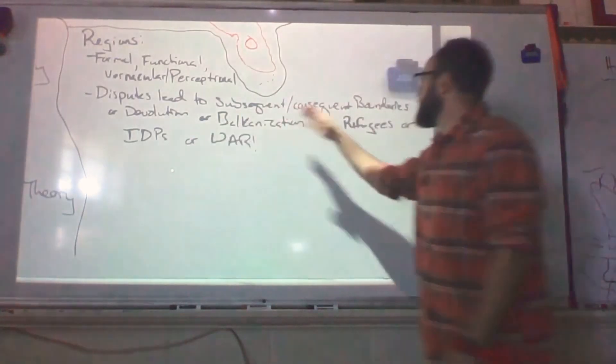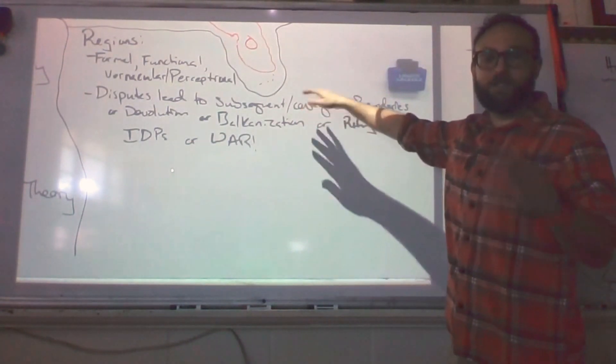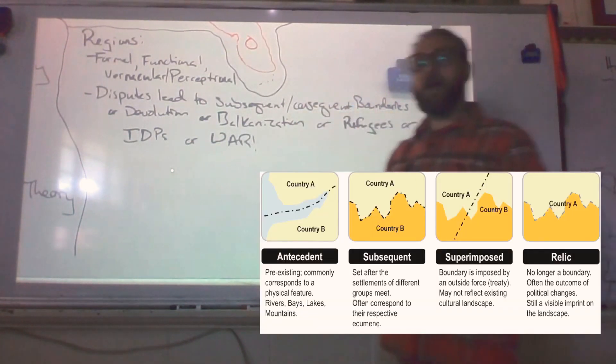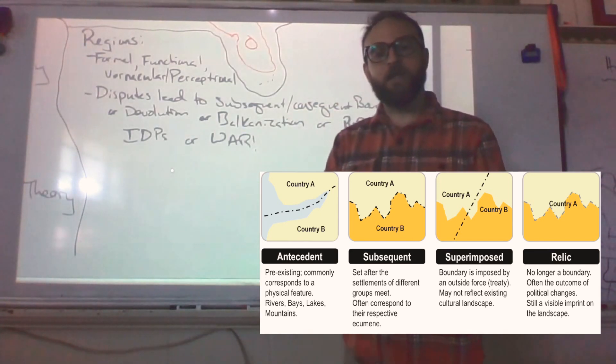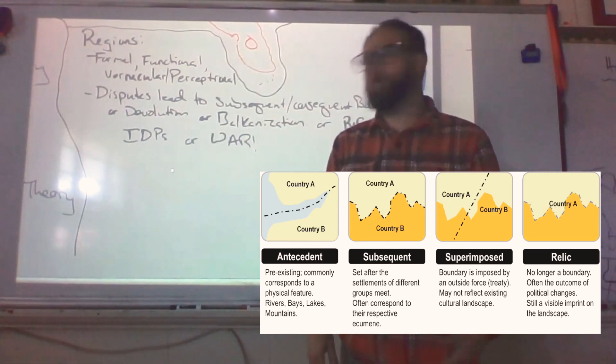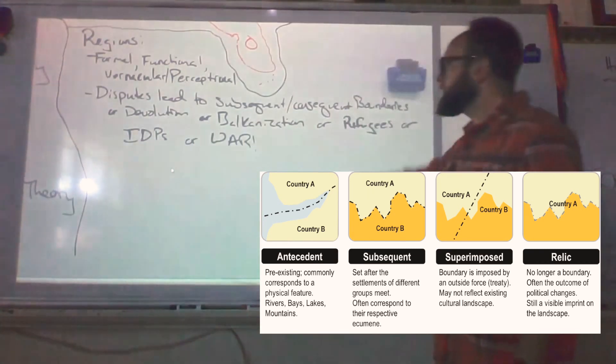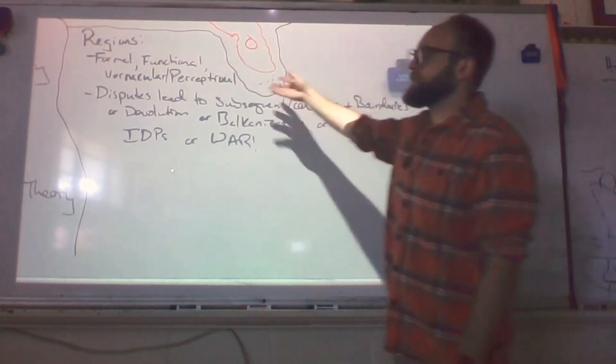Disputes lead to subsequent and consequent boundaries. So, this, do you remember what these mean? A subsequent boundary would be it occurs after culture or is evolving with culture as political units, as formal regions argue, then the boundary might change, like Vietnam's northern boundary changed a lot due to political systems and constant infighting. I mean, you may recall this from a history class, perhaps. And so, you know, we change our boundaries to reflect our perceptual differences.